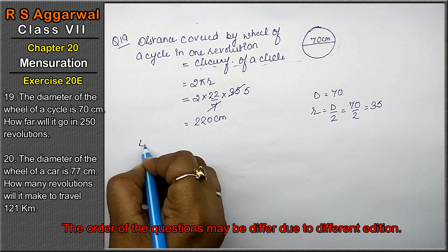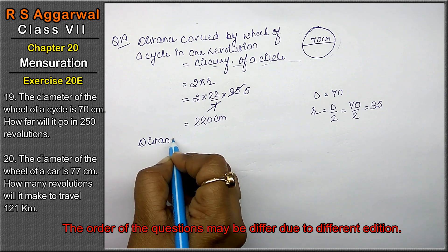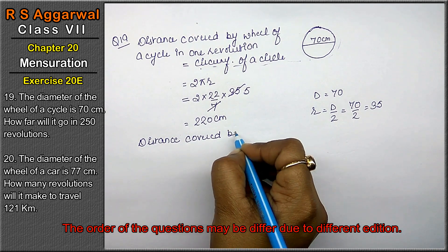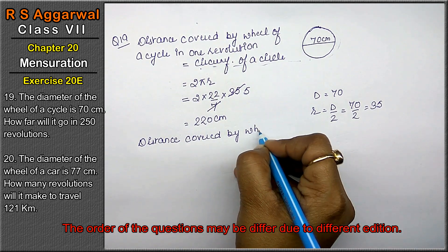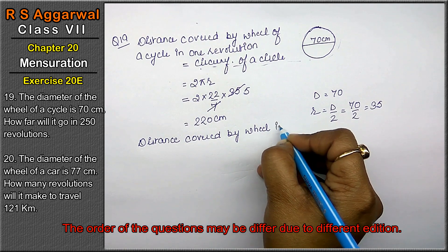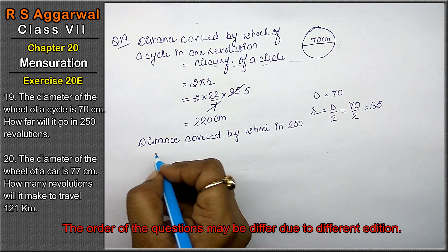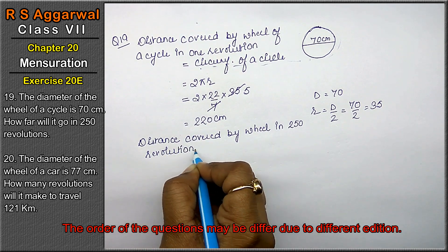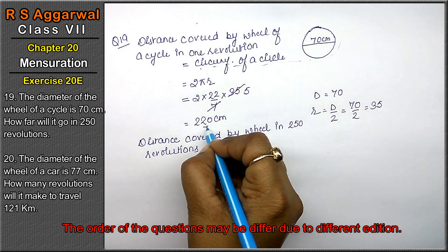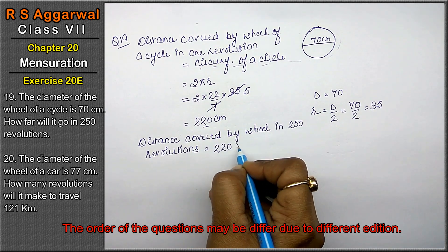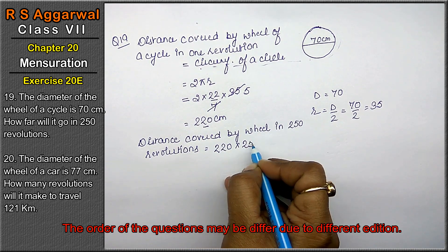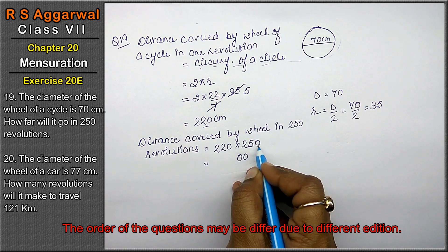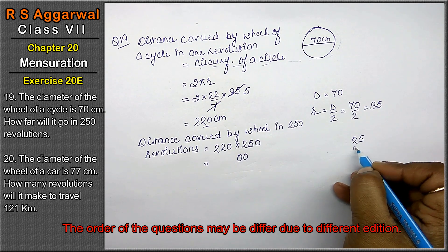Now, distance covered by the wheel in 250 revolutions. 1 revolution mein hamara 220 aaya tha. Aur hume 250 ka nikalna hai. To hum 250 into 220 karenge. 25 into 22: